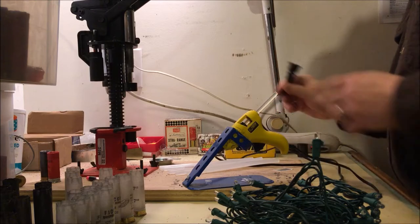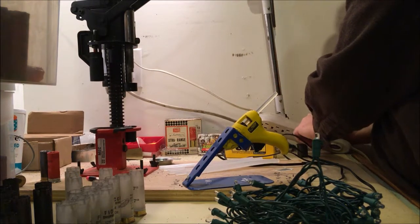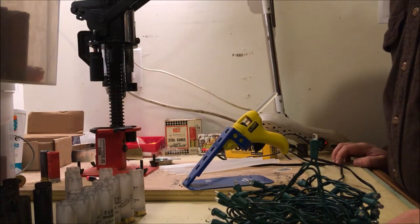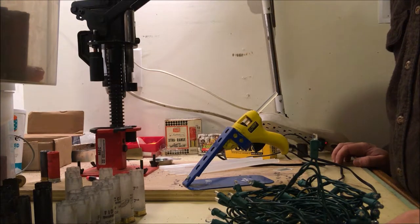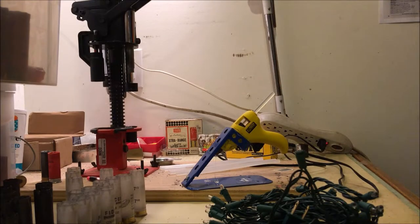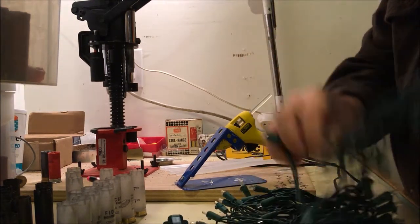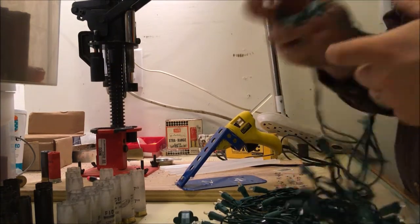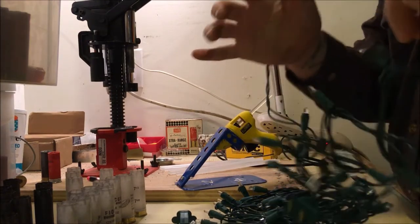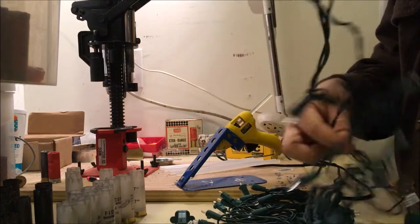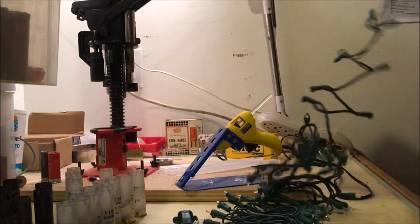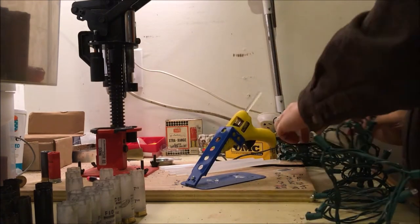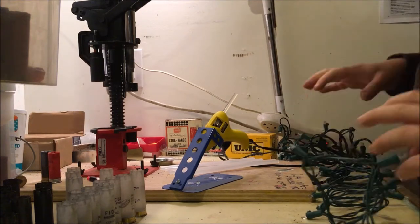Okay so first of all we're gonna plug in our hot glue gun. If you don't have a hot glue gun you should probably get one because they're cheap and affordable and useful. Just go get one. Hot glue gun is hot. So let's get this all figured out here. Untangling Christmas lights. Tis the season.